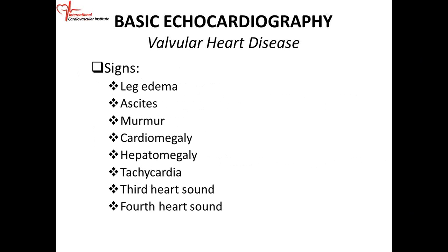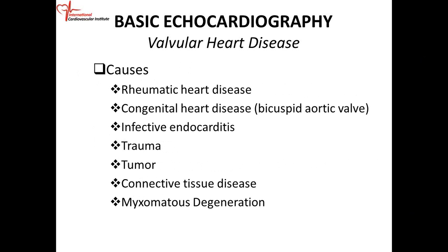Leg edema and ascites are related to developing pulmonary hypertension — you get a backup of blood on the right side, increasing right ventricular systolic pressure, right atrial pressure, and increased pressure in the portal system. So everything goes backwards and pressure increases. Signs include: leg edema, ascites, murmur related to the valvular pathology, cardiomegaly, hepatomegaly, tachycardia, and third and fourth heart sounds. Those are some of the signs of valvular heart disease in general.